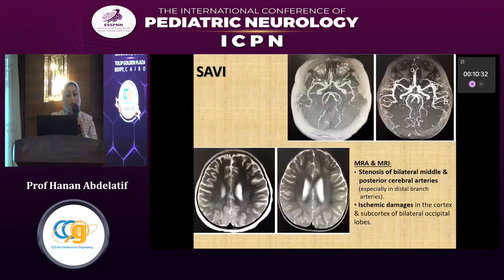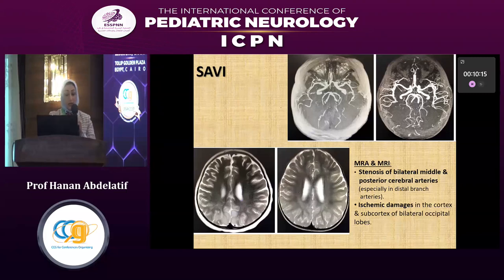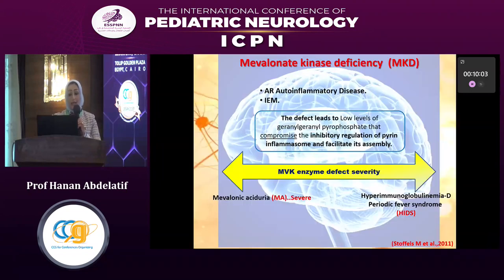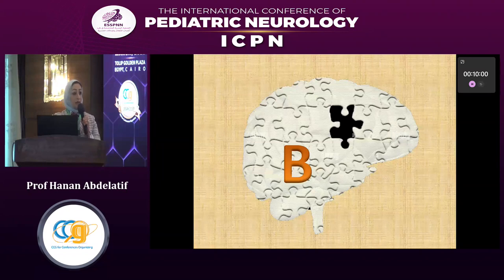The MRI in these patients shows stenosis of bilateral middle and posterior cerebral arteries, especially in the distal branch arteries, and ischemic damage in the cortex and subcortex of bilateral occipital lobes. The patient I have shown is now presenting with blindness because of another attack of bilateral occipital ischemic damage. This concludes the interferonopathy group, covering Aicardi-Goutières and SAVI.